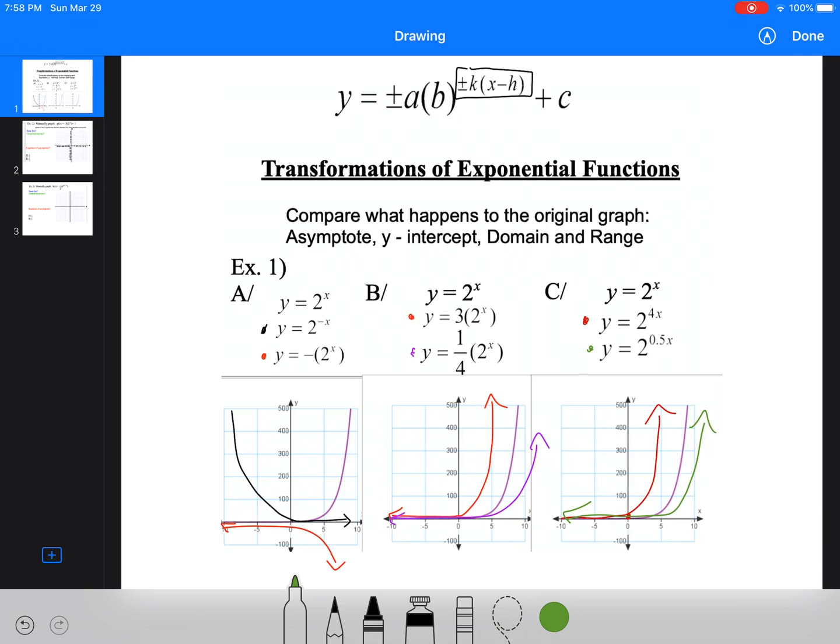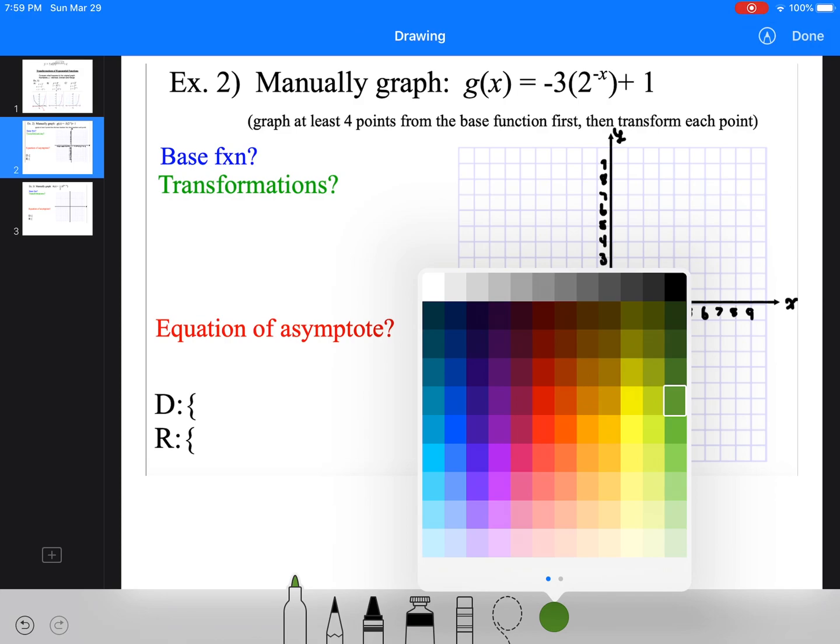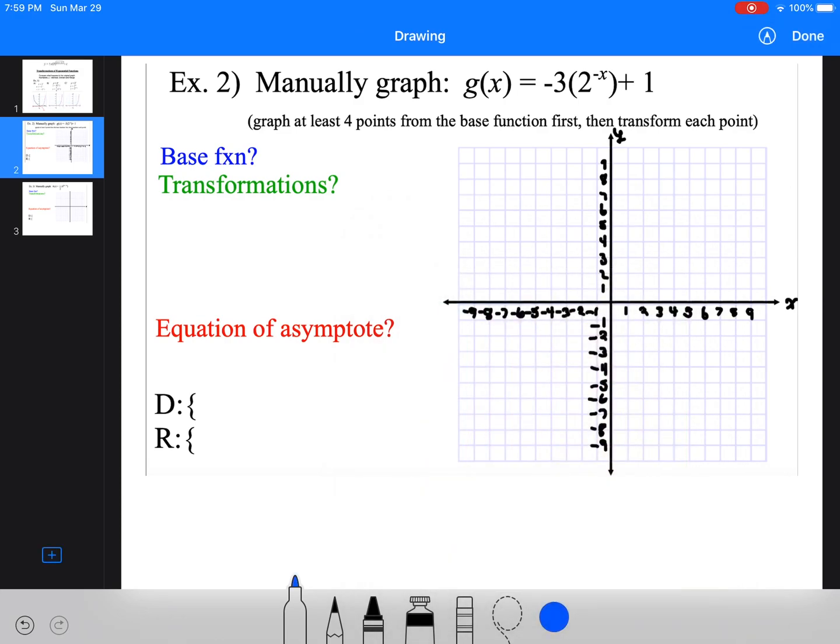The asymptote for all of these graphs hasn't changed. The only thing that's actually going to change the asymptote is the c value, because that's moving the whole graph up or down by that c value. The c value is always going to tell us what our asymptote is. So if we were looking at a graph like this, it says graph at least four points. Now typically I wouldn't make you graph four points, but for this one, just for argument's sake, we want to have four so that we've got a nice easy thing to graph.